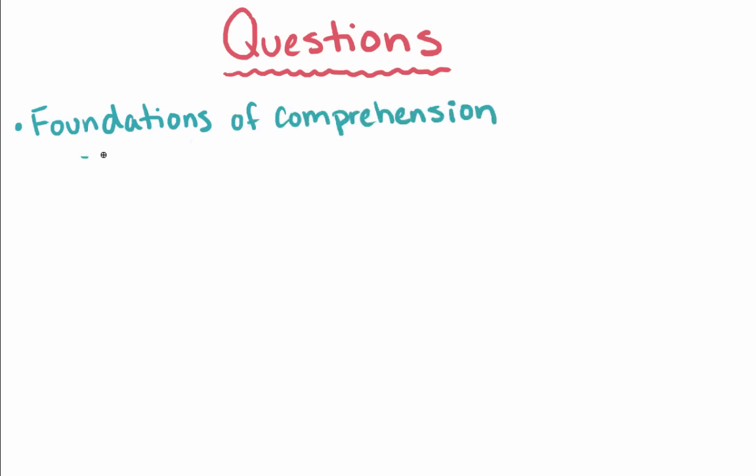There are three types of questions you'll be asked to answer in this section. The first type is called Foundations of Comprehension. These questions mainly ask you to answer questions about the author's intended message. They'll ask you about the overall idea, or about why the author used specific words or phrases, or why the author organized the passage in a specific way.